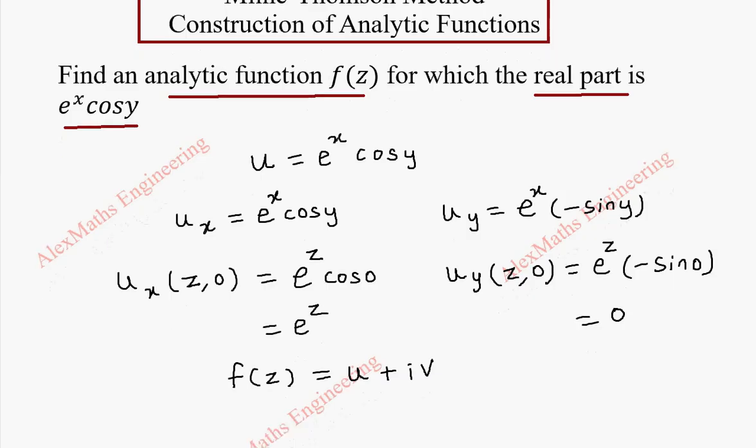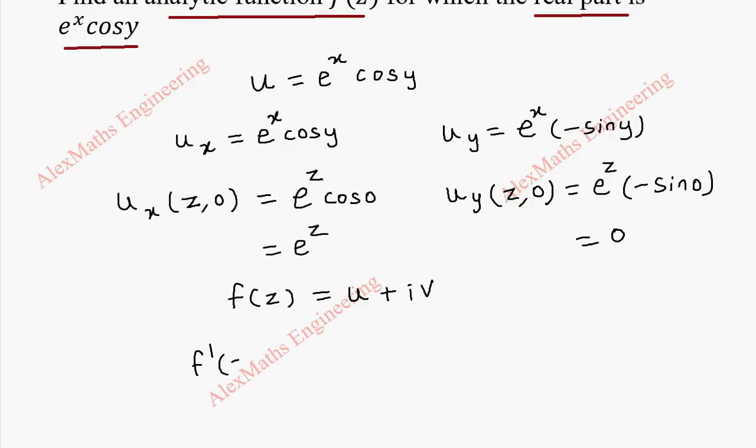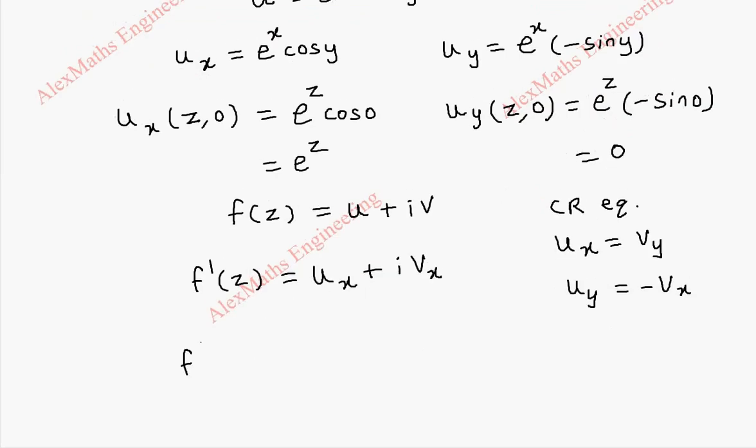Now from this, if we find f'(z), the partial derivative with respect to x will be u_x plus i v_x. But we know the CR equations. So by CR equations, u_x is v_y and u_y is minus v_x. So in place of v_x, we are going to replace that with minus u_y.